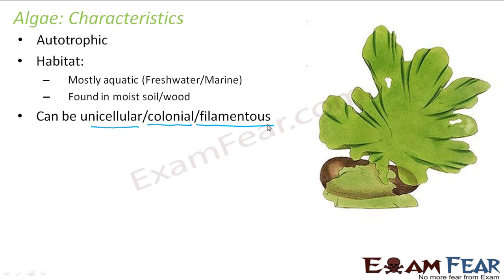Here in this picture you see an example of an algae. Do you see a distinct root, a distinct stem, or a leaf? Everything appears leaf-like, but we don't see distinct leaves. That is why they are said to be thallophytes, because they do not have body differentiation.